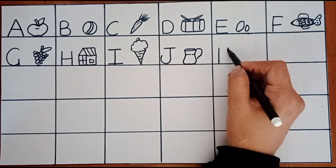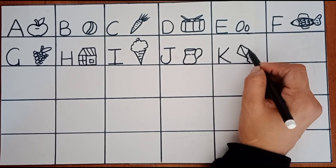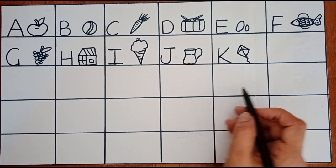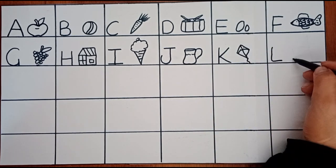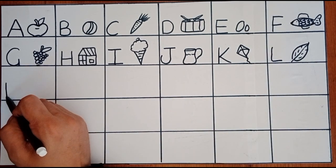K for kite. U, R, S, T, U, V, W, X, Y, and Z. L, L for leaf. Now I know my ABCs. Next time won't you sing with me.